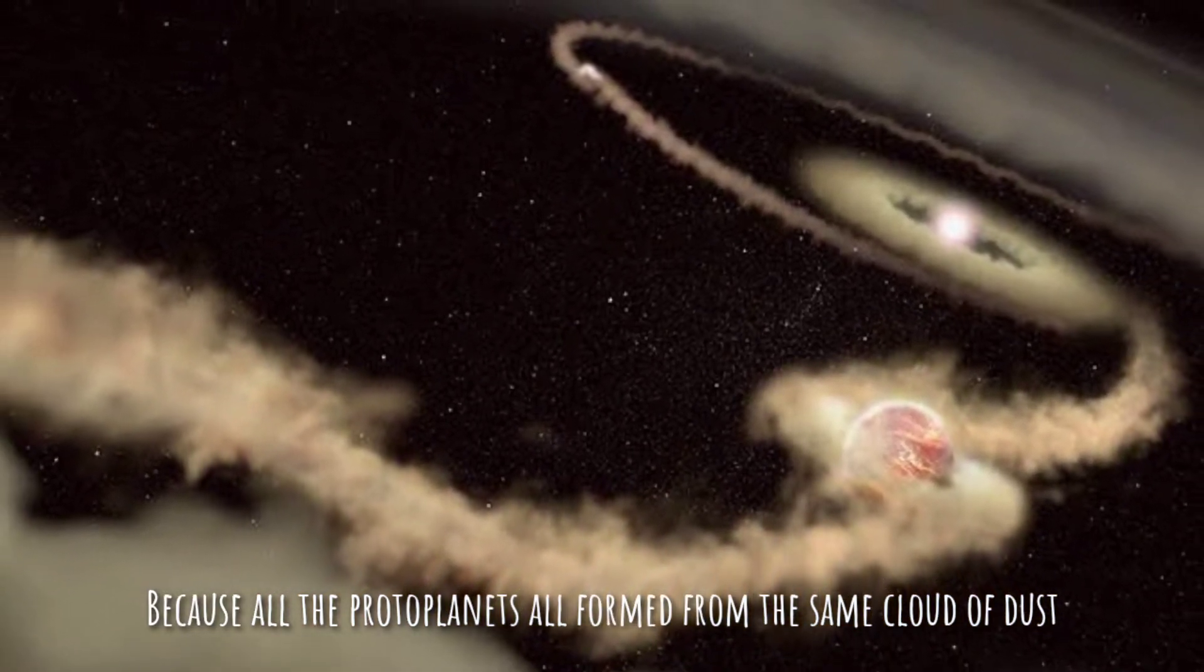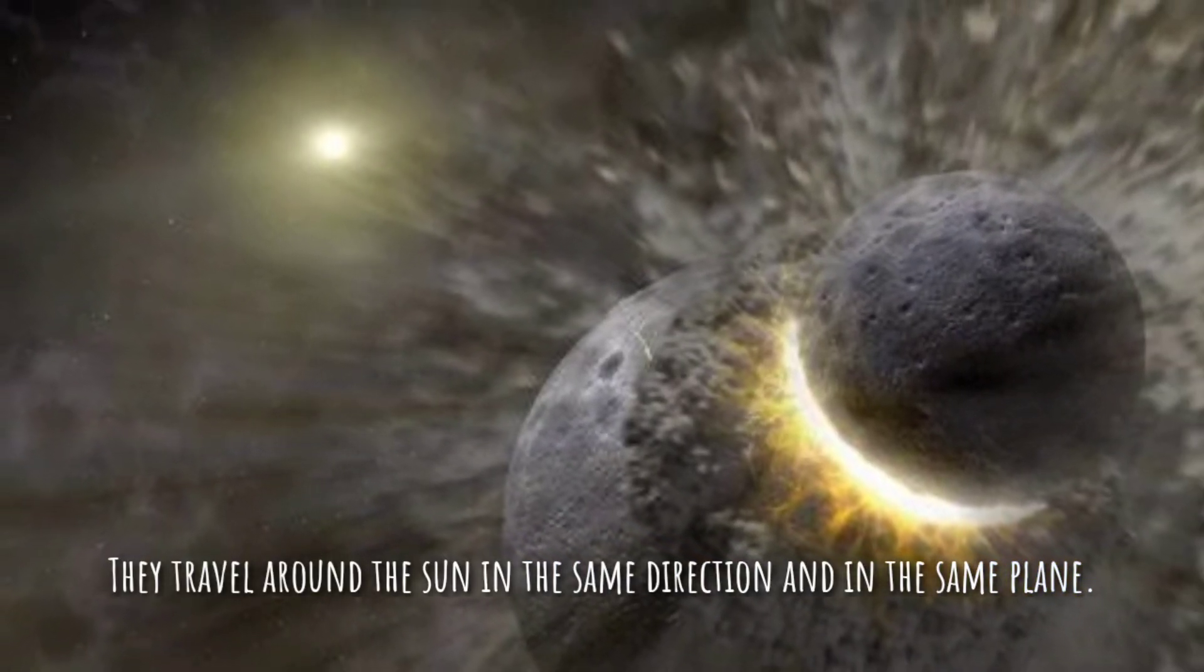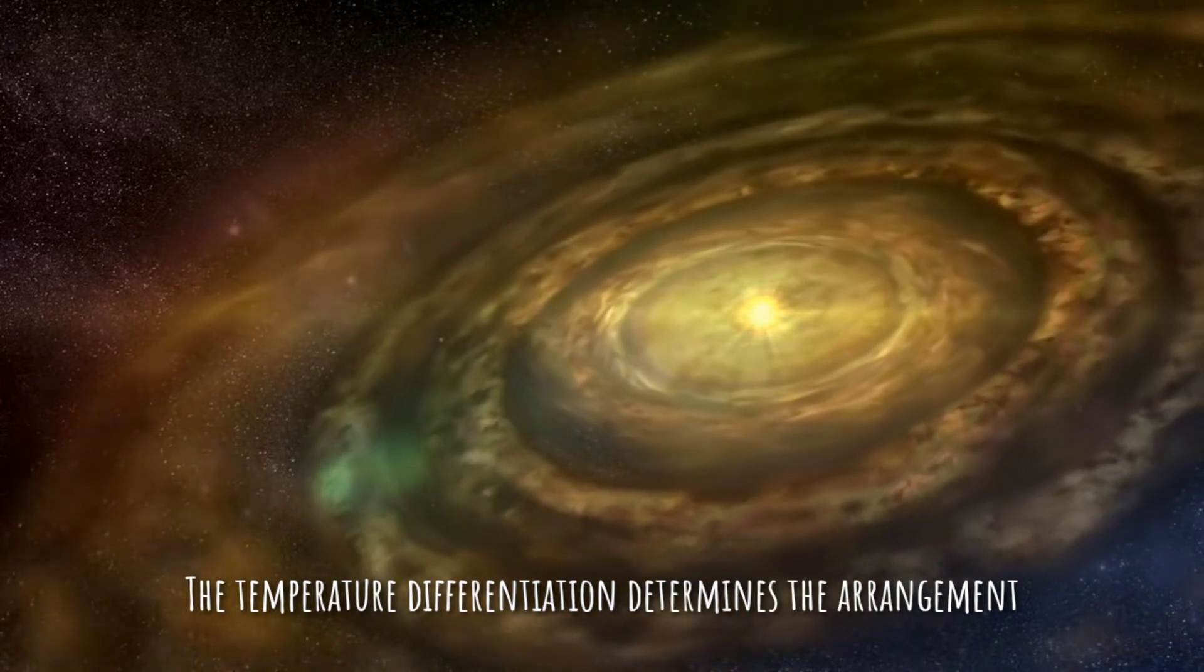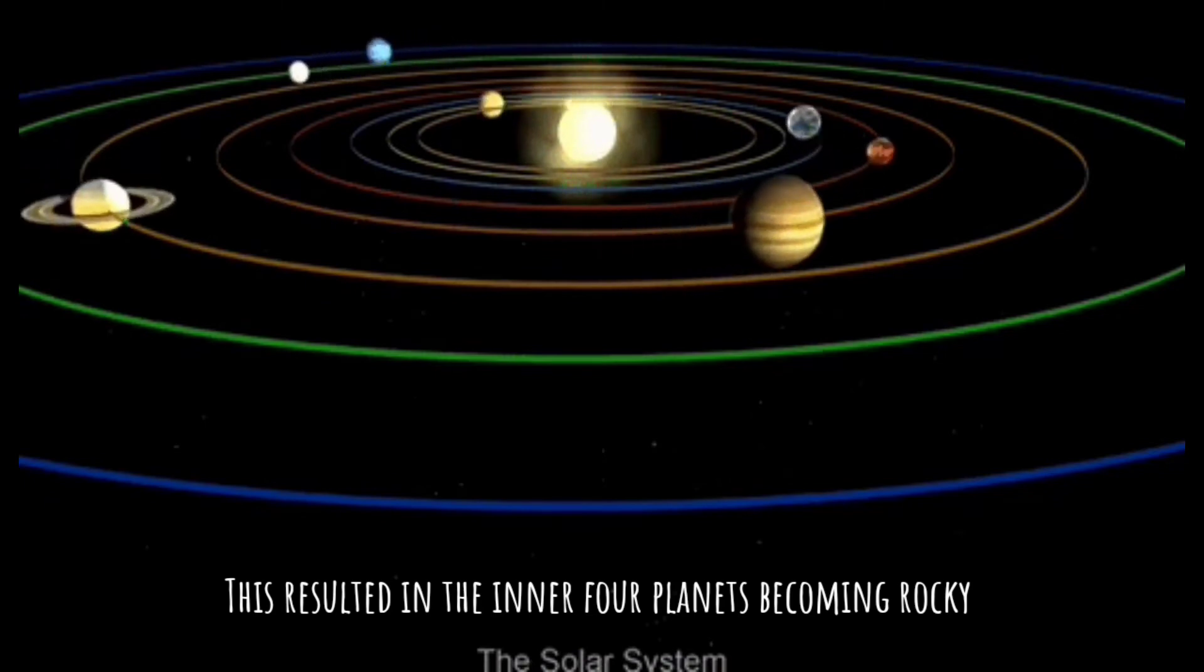Because all the protoplanets formed from the same cloud of dust, they travel around the sun in the same direction and in the same plane.